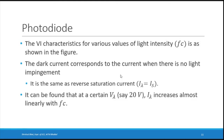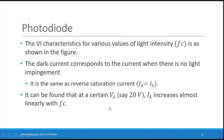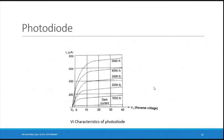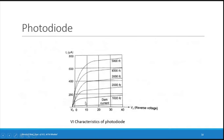The VI characteristics show various light intensity curves. The dark current corresponds to the reverse saturation current with no light. At a fixed V-lambda, say 20 volts, i-lambda increases almost linearly with foot-candles — it behaves like a straight line after 20 volts.